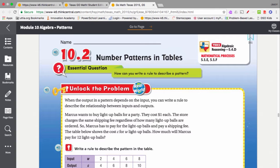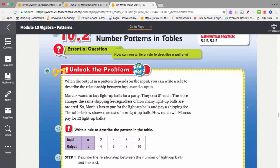So here's the situation we want to look at here. Marcus wants to buy light-up balls for a party. It costs a dollar each. The store charges the same shipping fee regardless of how many balls are ordered. So Marcus has to pay for the light-up balls and pay a shipping fee. The table shows the cost C for W light-up balls. How much will he pay for 12 light-up balls? So here's our pattern.